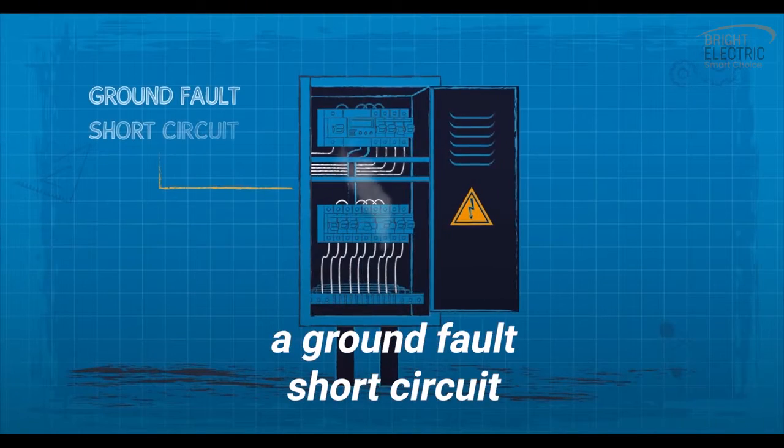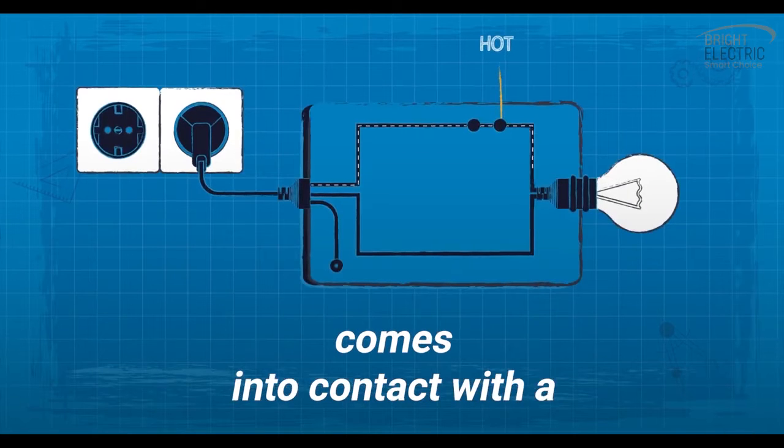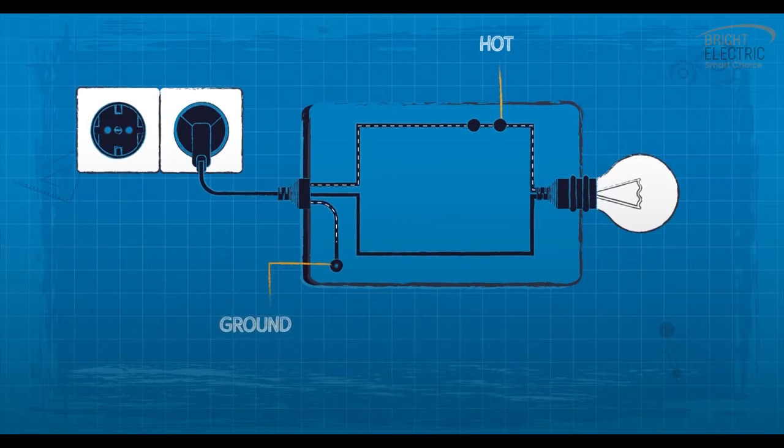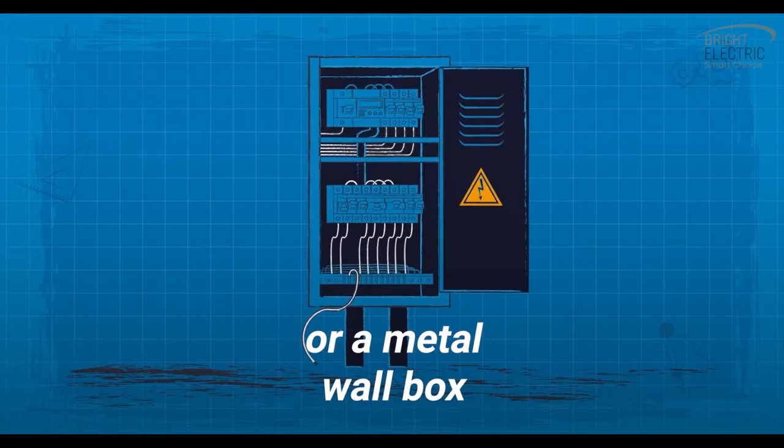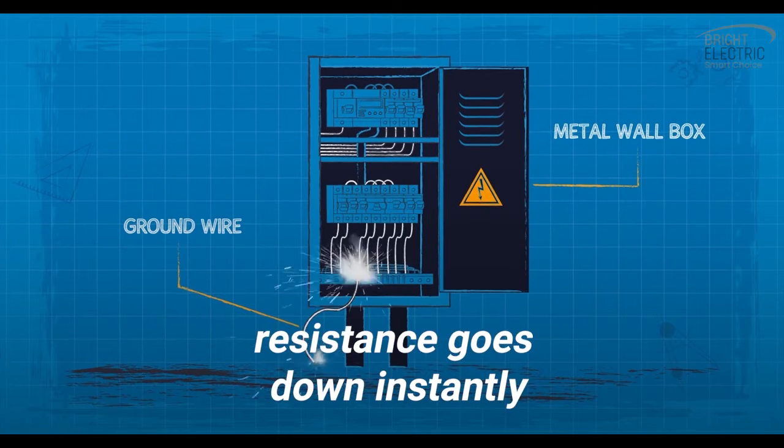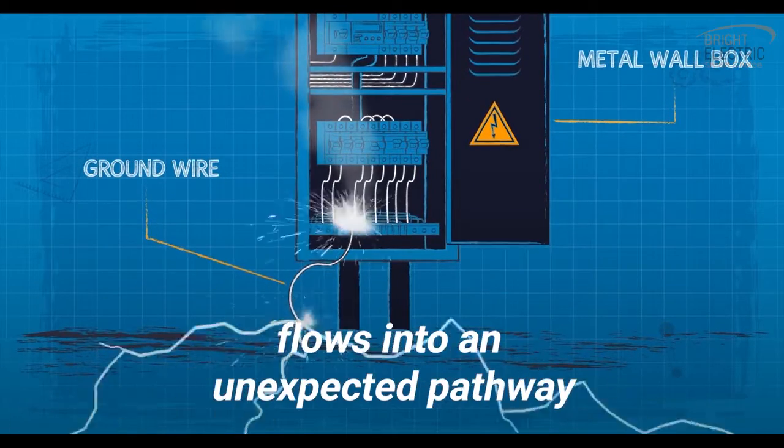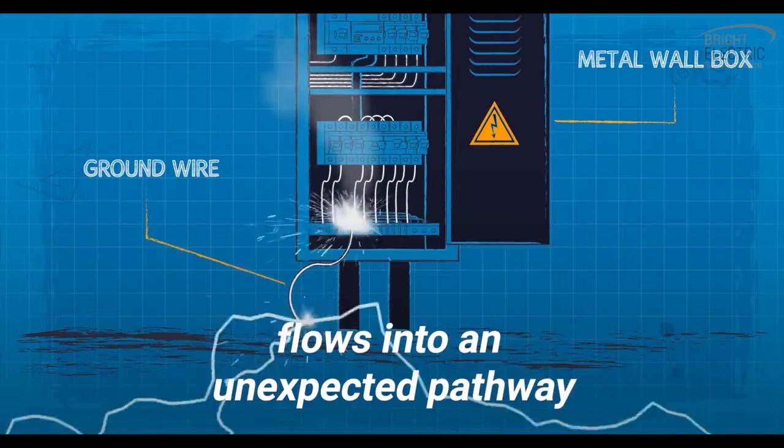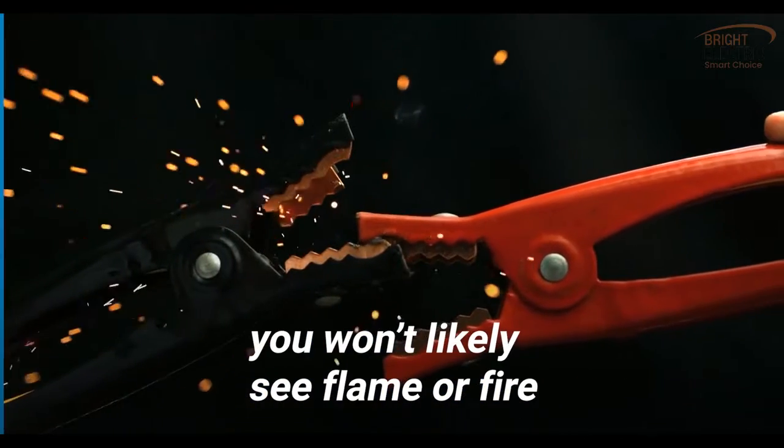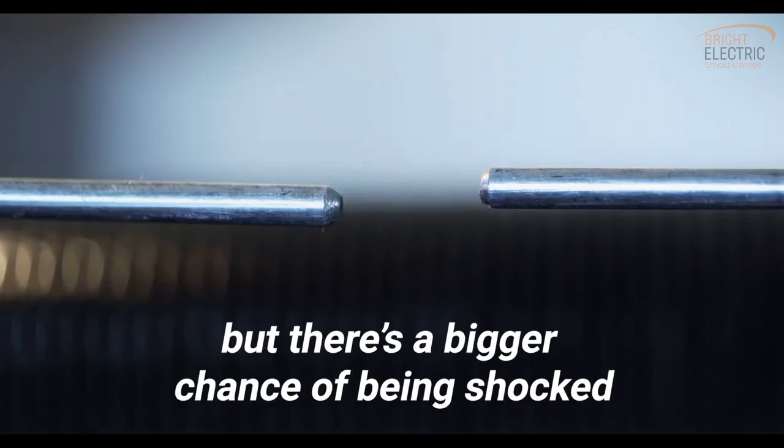The second type is called a ground fault short circuit, and it occurs when the hot wire comes into contact with a grounded portion of the system - for example, a bare ground wire or a metal wall box. Like a normal short circuit, resistance goes down instantly and a vast amount of current flows into an unexpected pathway. In this short circuit, you won't likely see flame or fire, but there's a bigger chance of being shocked.